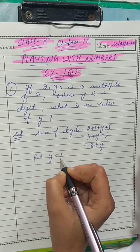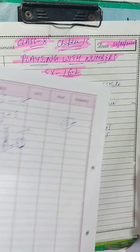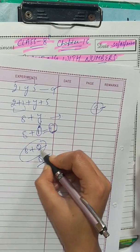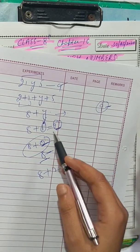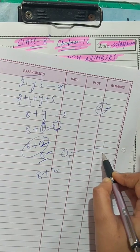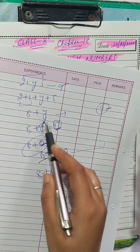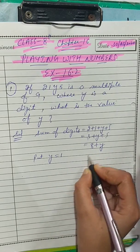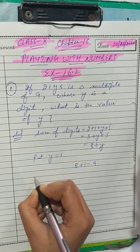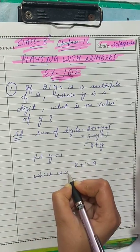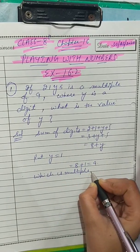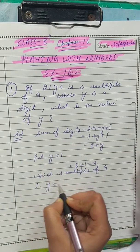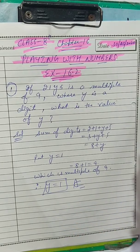Put y = 1. If we try y = 0, we get 8 + 0 = 8, which is not in the table of 9. Checking all values from 0 to 9, only y = 1 works because 8 + 1 = 9, which is a multiple of 9. So y = 1 is our answer. That completes question number 1.